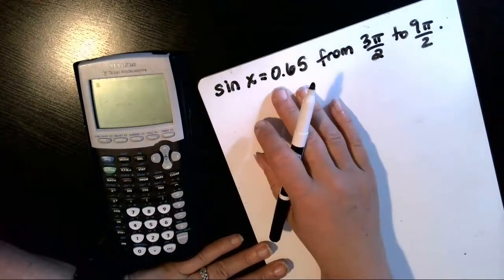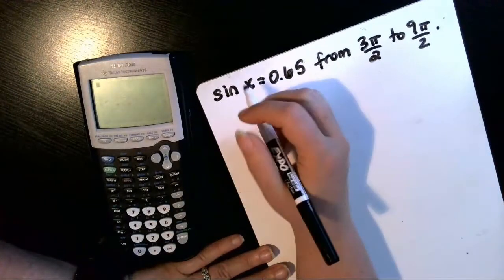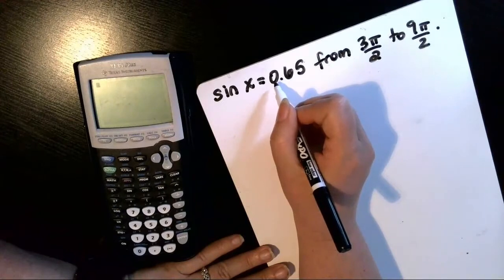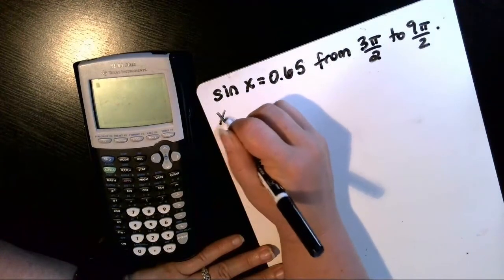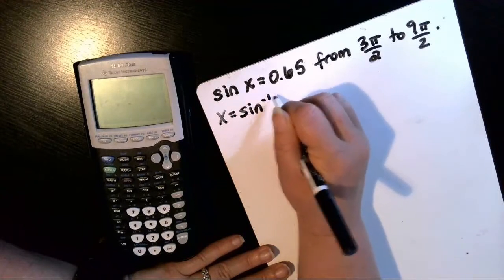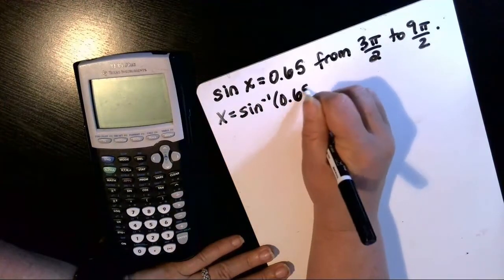Okay, if we want to solve this equation for x, the first thing we're going to need to do is take the inverse sine of both sides. So x is equal to the arc sine of 0.65.